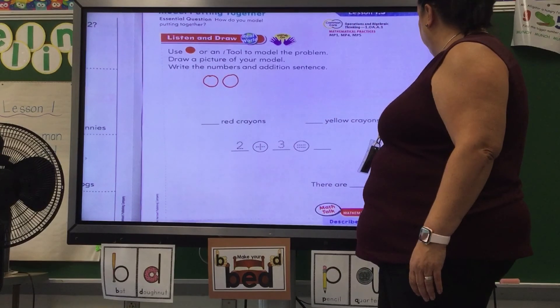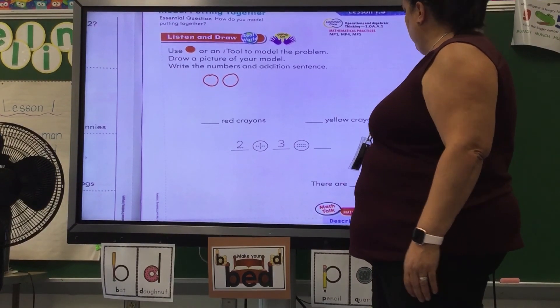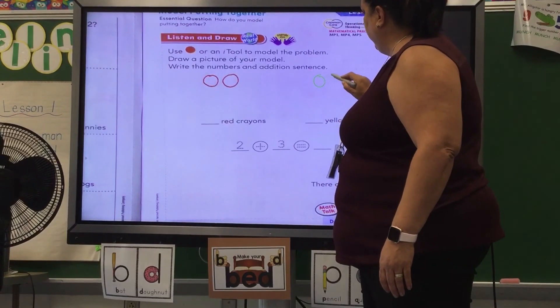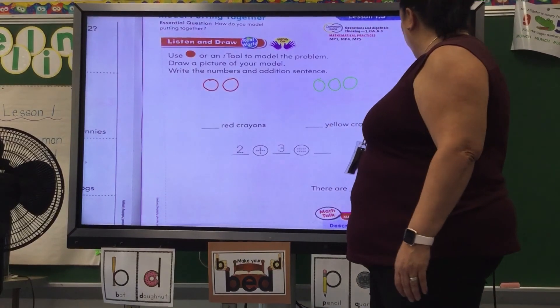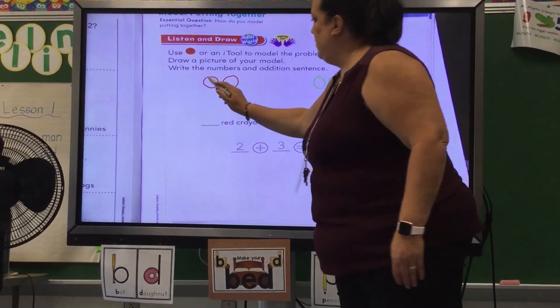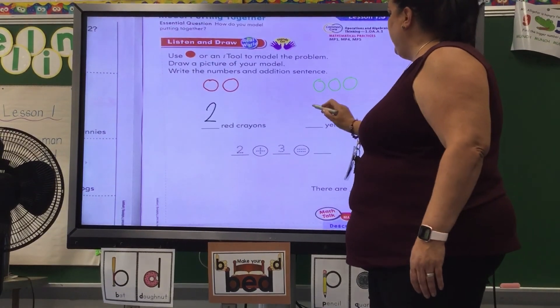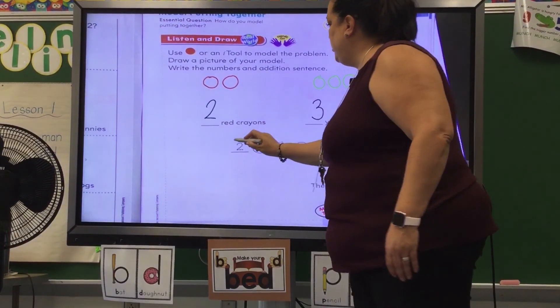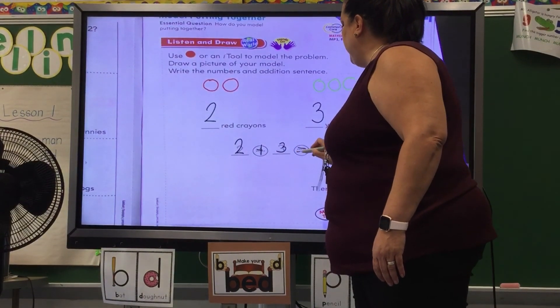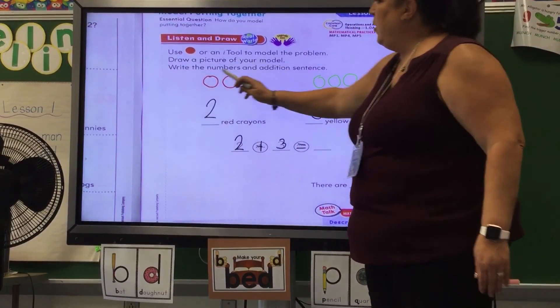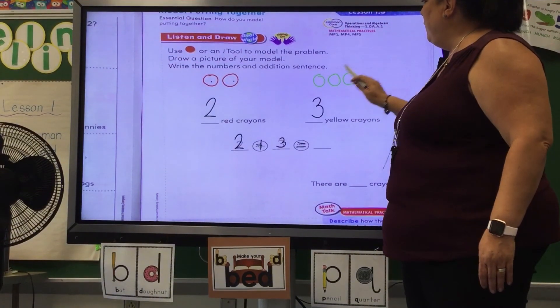Two red crayons. I don't have yellow but I have green so I'll do three green, three yellow. We'll pretend that that's yellow. Alright I have two, one two red, one two three yellow, two red plus three yellow equals how many all together. Let's count. One, two, three, four, five.